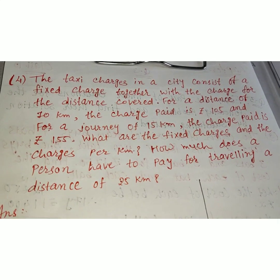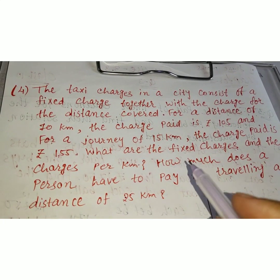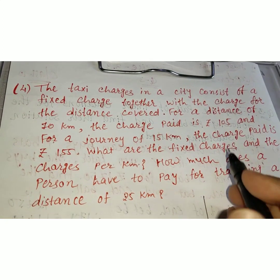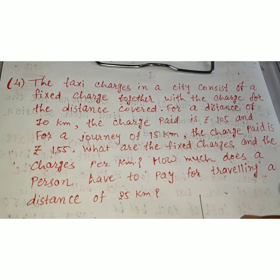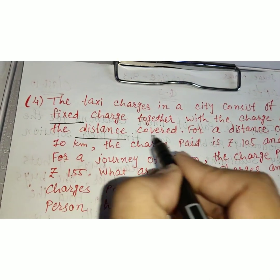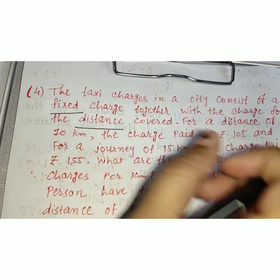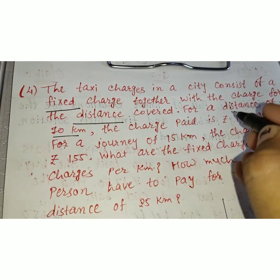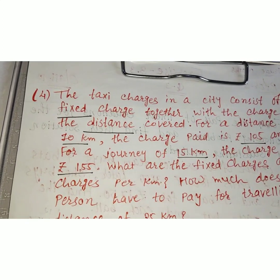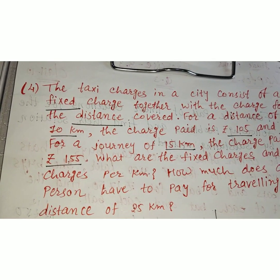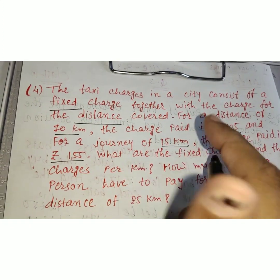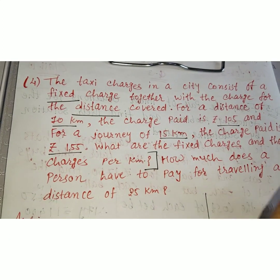First let us understand the question. The taxi charges in a city consist of two parts: first part is the fixed charges, and second part is the charges for the distance covered. We are given: for 10 km the amount paid is Rs. 105, and for 15 km the amount paid is Rs. 155. We have two questions to find: first, the fixed charges and charges per km, and second we will solve after that.